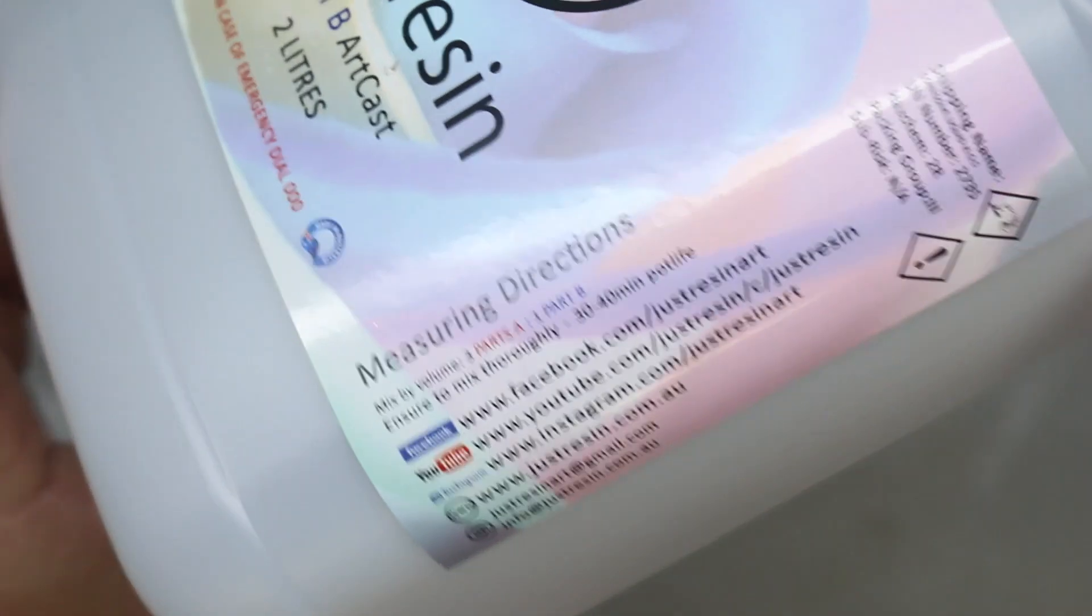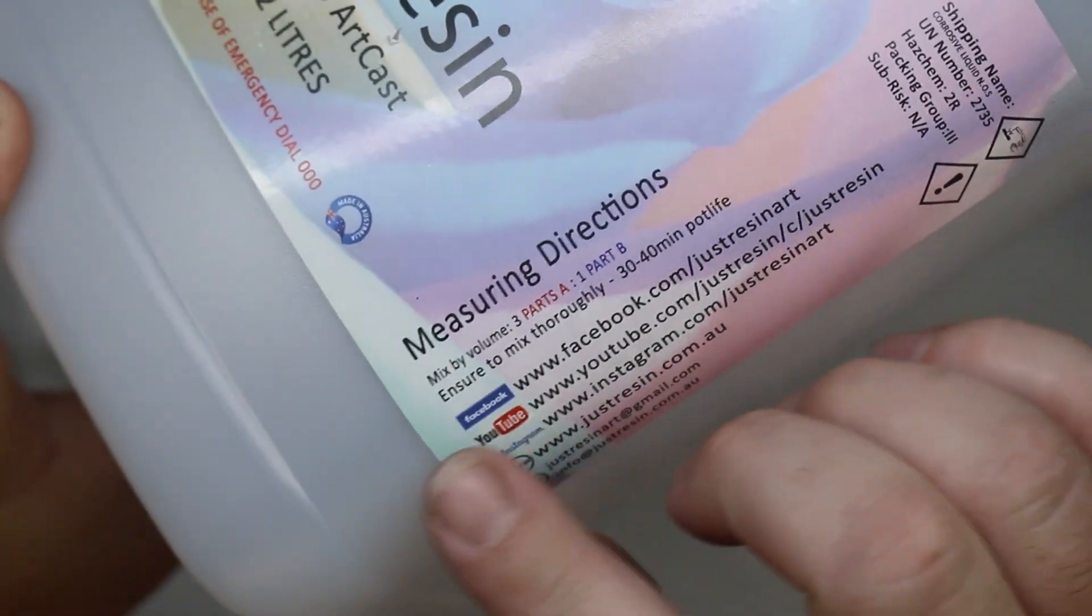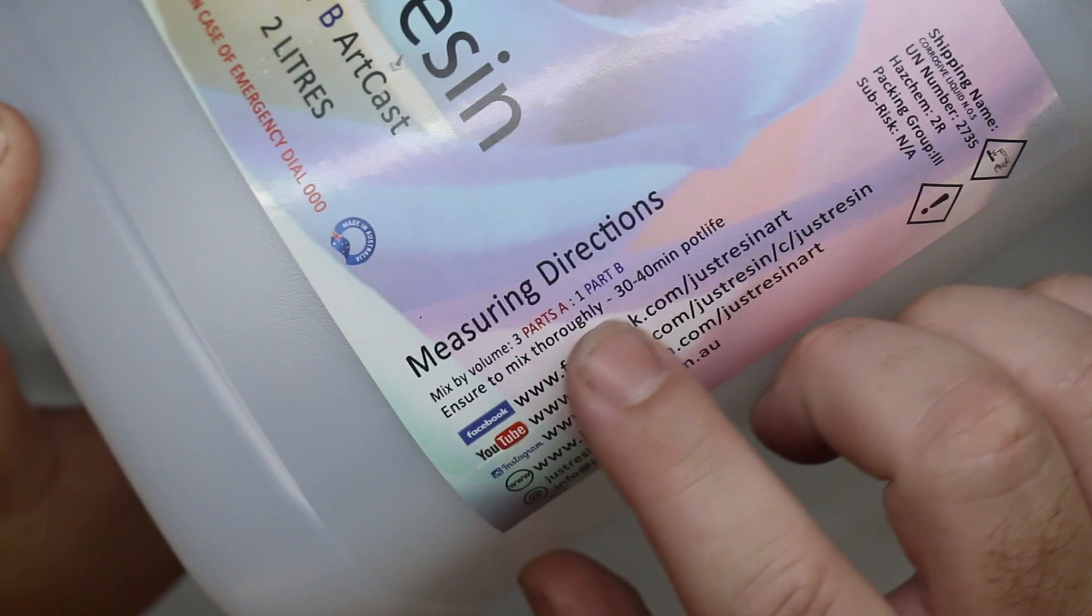Now it's time to mix our resin. Now the resin I'm using is a slow set version and it's mixed at a ratio of three parts A to one part B.